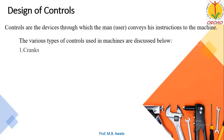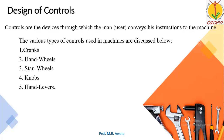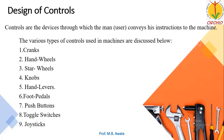I have listed some of them: cranks, hand wheels, star wheels, knobs, hand levers, foot paddles, push buttons, toggle switches, and joysticks. These are some of the controls. Generally controls are used for controlling the machine or giving some instructions to the machines.